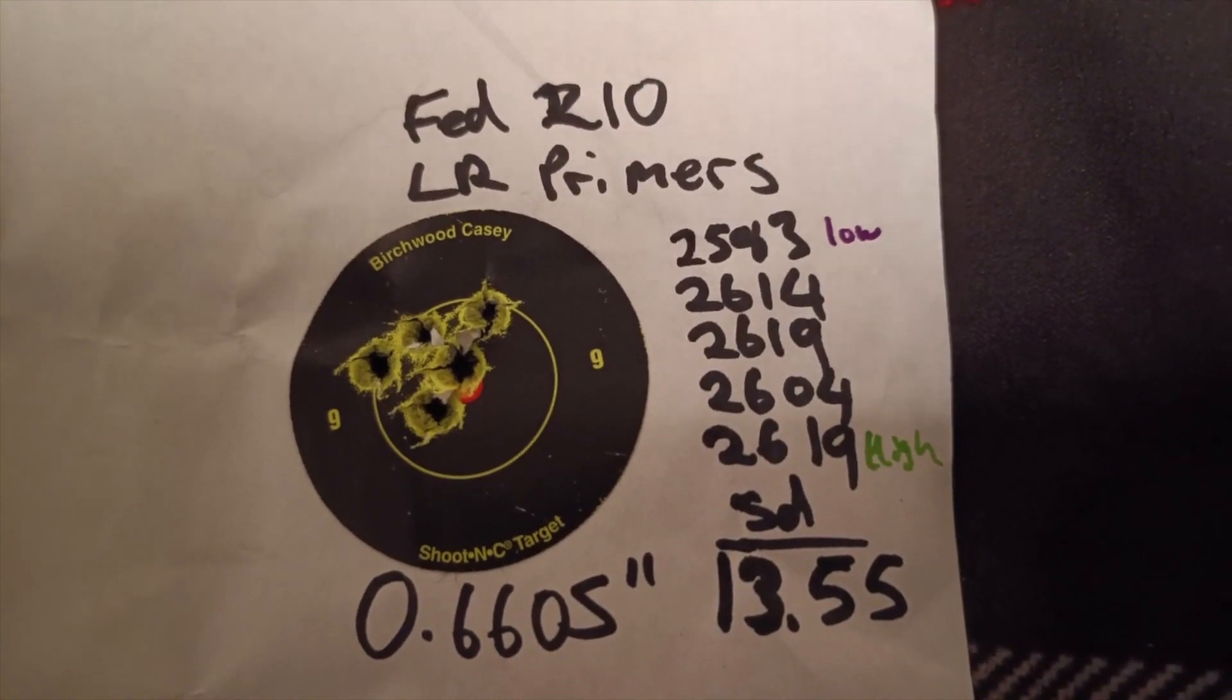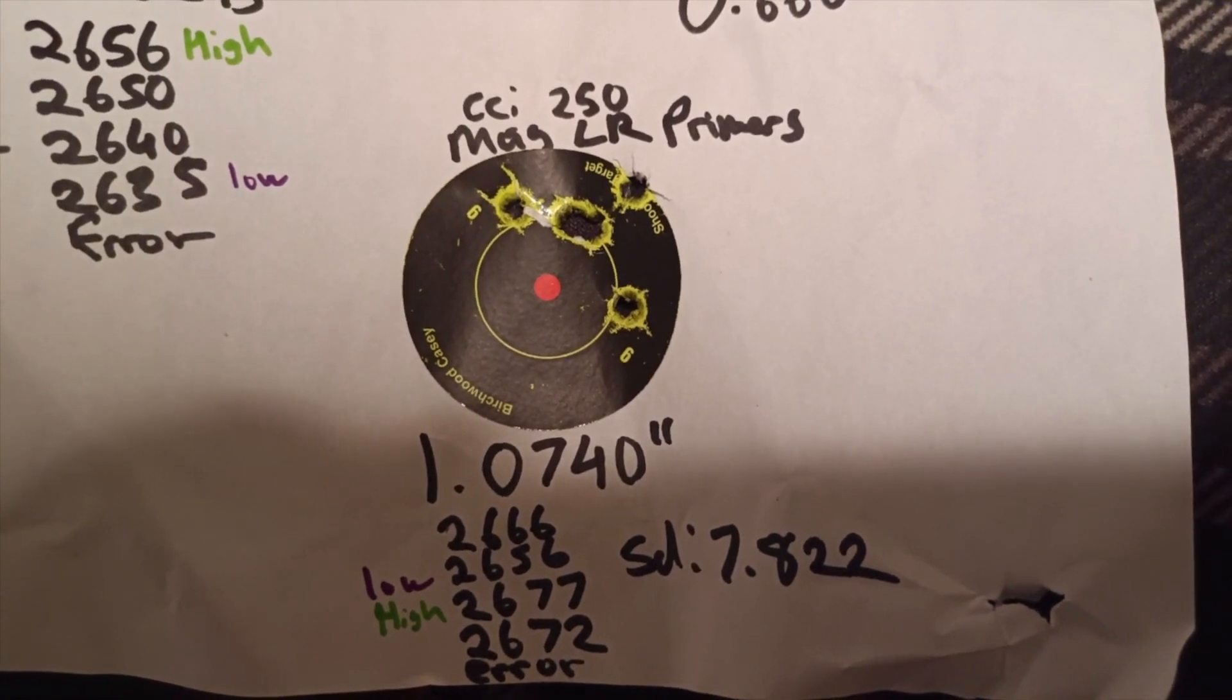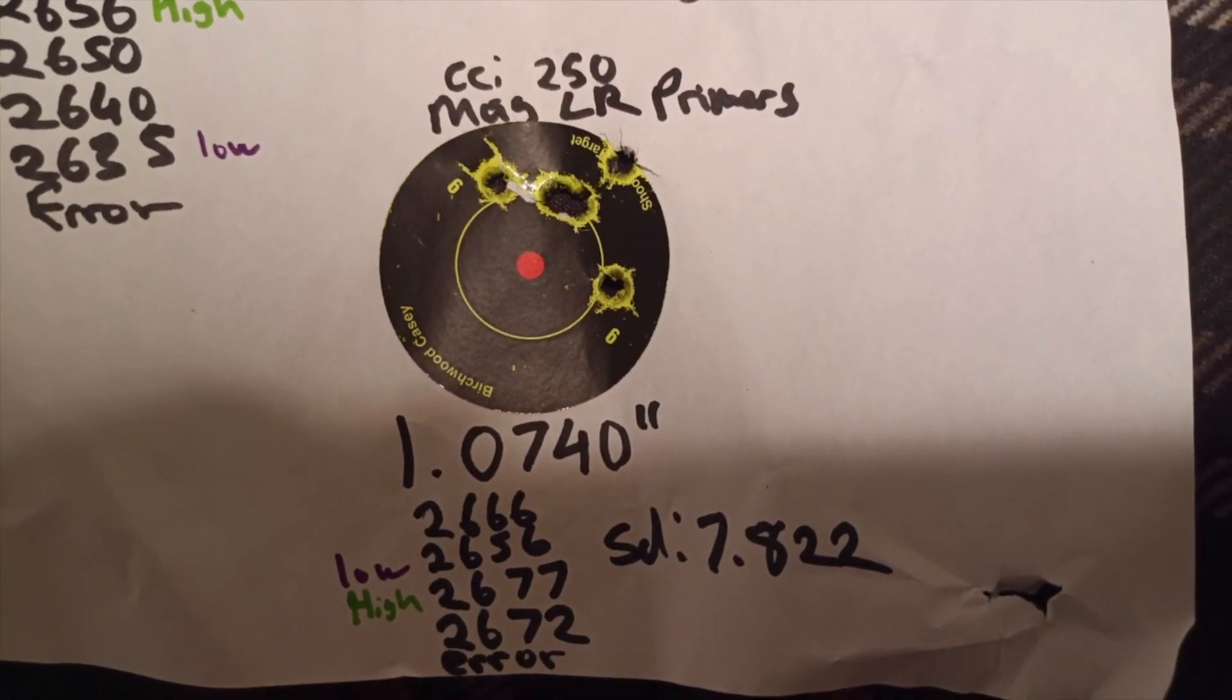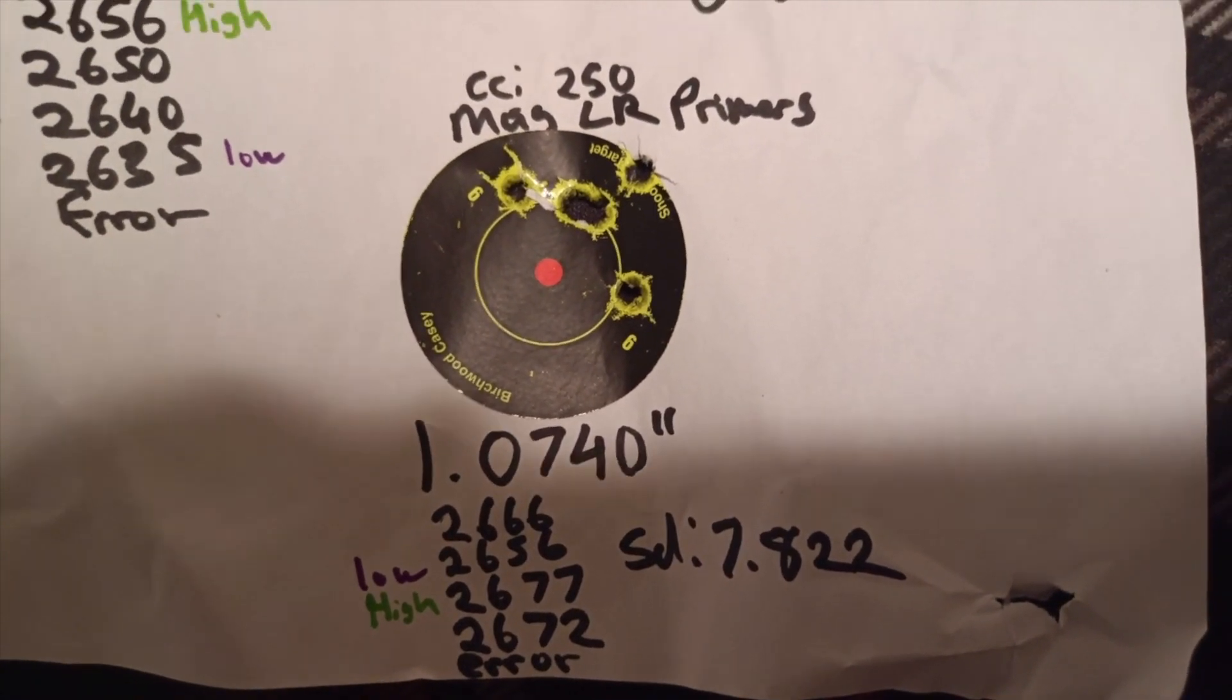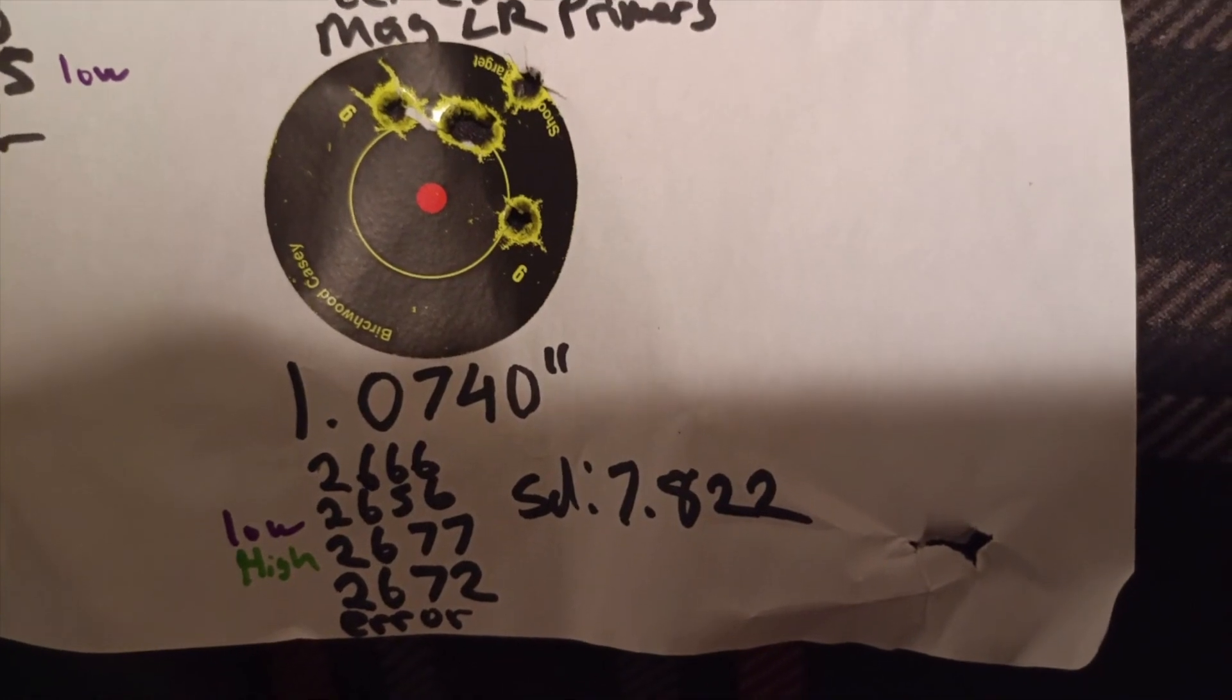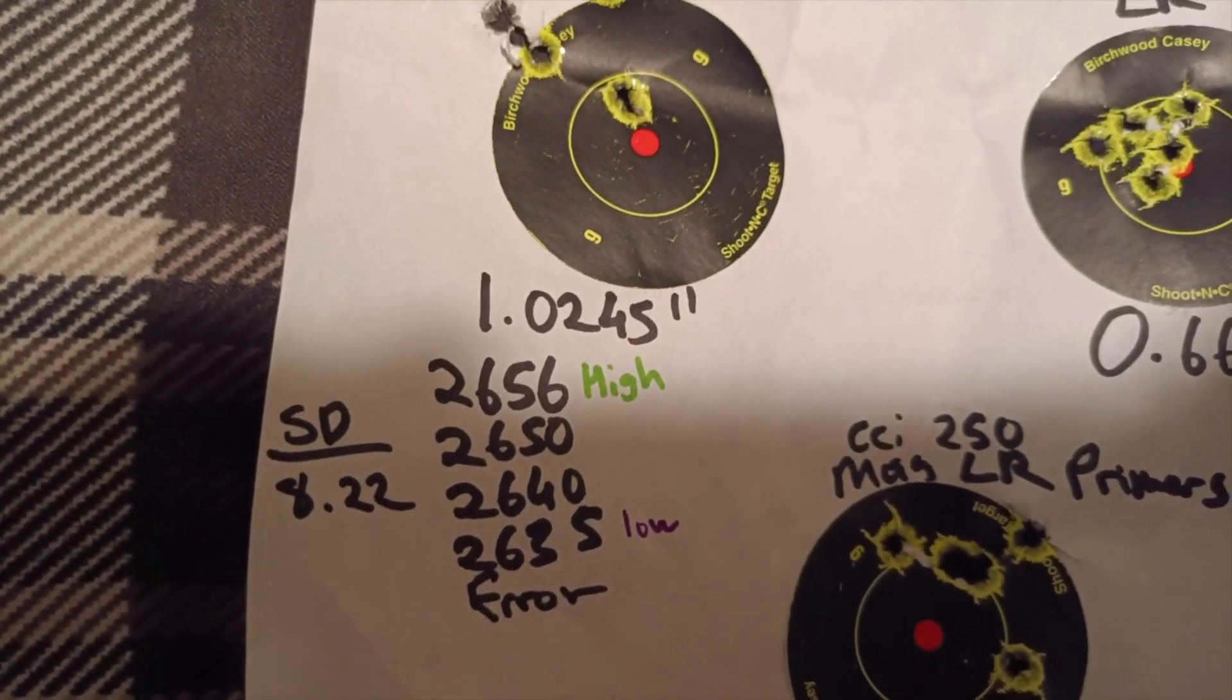And produced the best group out of all of them. And here we have the Magnums and these are CCI 250 and these are 1.0740 and the high was 2677 and the lowest 2656. So the highest velocities and the lowest standard deviations.